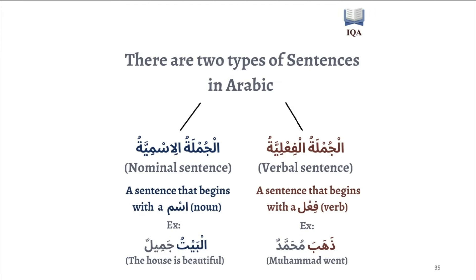Assalamu alaikum warahmatullahi wabarakatuh. Alhamdulillah, in this lesson we'll be discussing the two different types of sentences in the Arabic language. In Arabic, we have two types of sentences: a jumlatun ismiya, which is the nominal sentence, or a jumlatun fa'aliya, which is the verbal sentence.